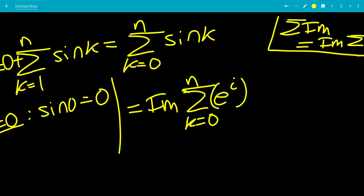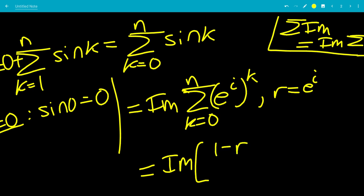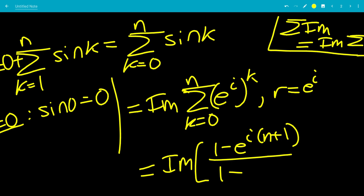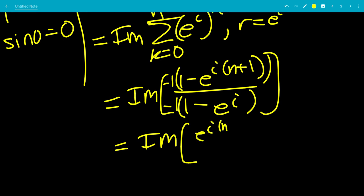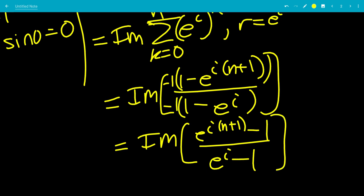We're going to write e to the ik as e to the i to the k, so r equals e to the i. The sum from k equals 0 to n of r to the k is the geometric series formula: 1 minus r to the n plus 1 all over 1 minus r. So we have the imaginary part of 1 minus e to the i times n plus 1 all over 1 minus e to the i.